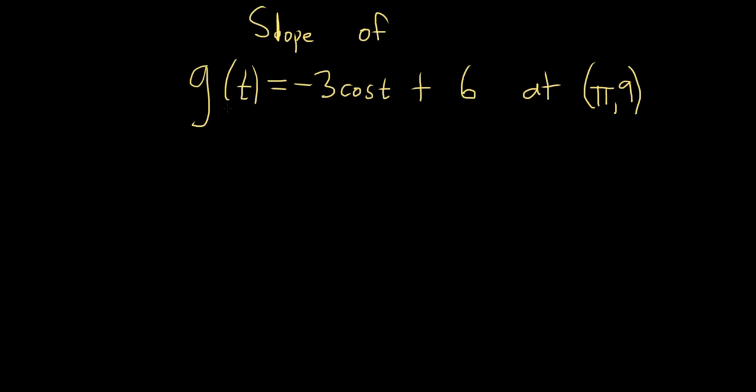Find the slope of the function g of t equals negative 3 cosine t plus 6 at the point pi, 9.